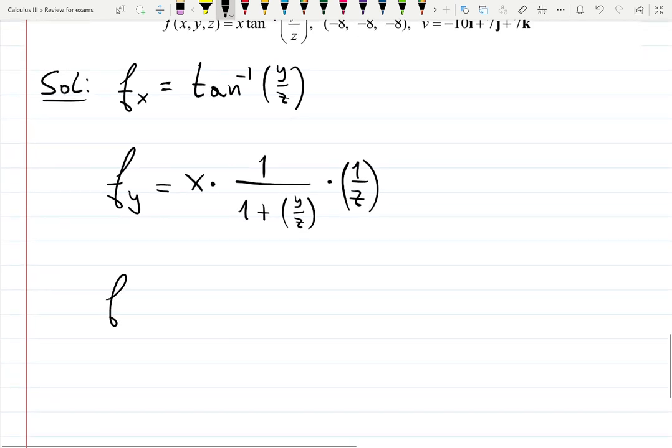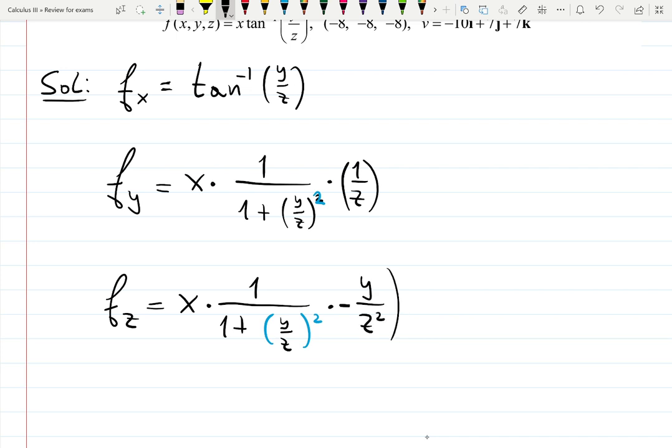Derivative with respect to z starts the same way: x times 1 over 1 plus input squared. I forgot squared over here. So squared y over z times, now y stays, and it's going to be minus y over z squared, because 1 over z prime is minus 1 goes down, z to the minus 2.